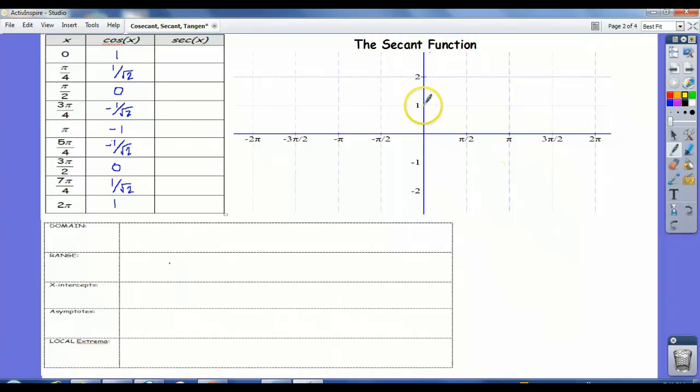So I'm going to graph in light yellow the cosine graph, which we all should know how to do at this point. I'm going to try to do it lightly because this is just a crutch to help us graph secant.